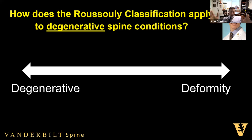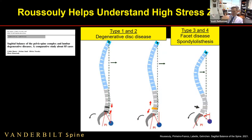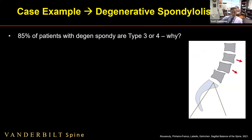How does the Roussely classification apply to degenerative spine disease? It helps us understand the high-stress zone. Type 1 and 2, with a straighter spine and fewer curves, tend toward degenerative disc disease and disc herniations. Type 3 or 4, with a higher sacral slope, are more likely to develop spondylolisthesis, facet disease, and multi-level staircase slips. Degenerative spondylolisthesis is something all spine surgeons treat, and 85% of patients with a degen spondy are Type 3 or 4.